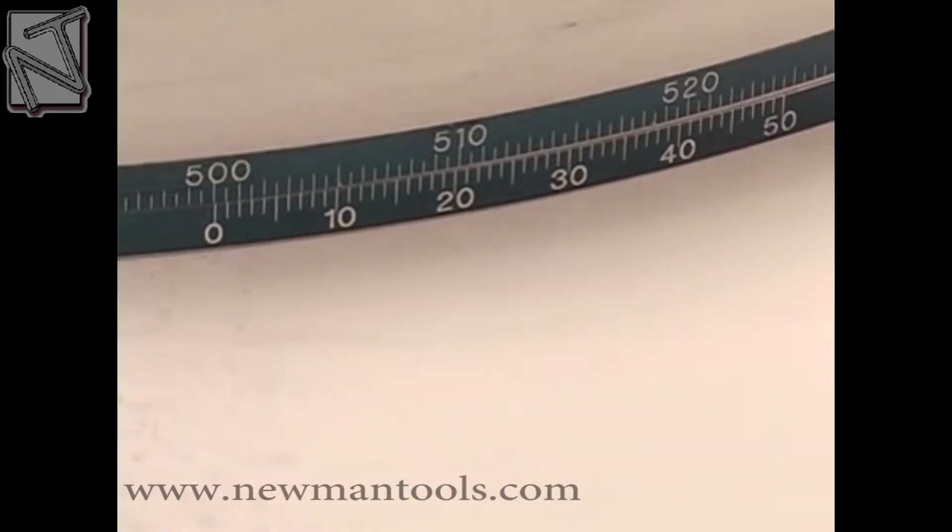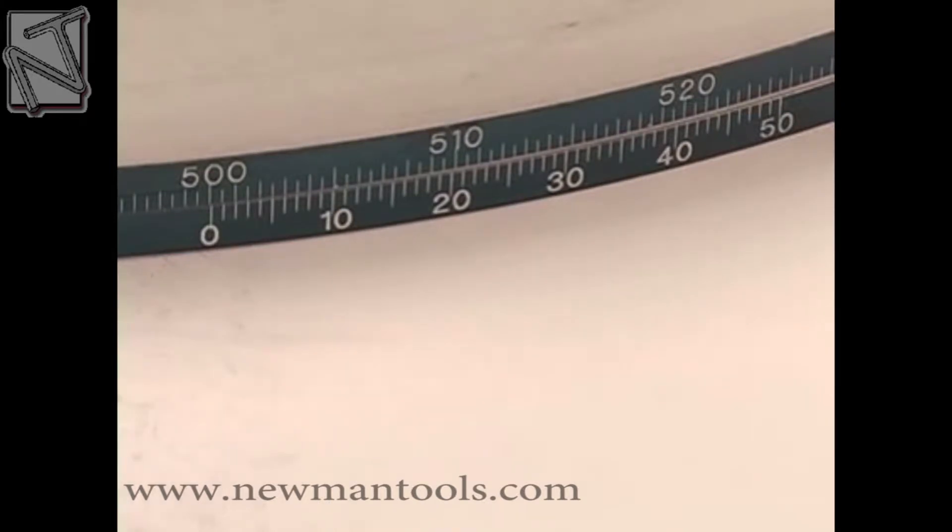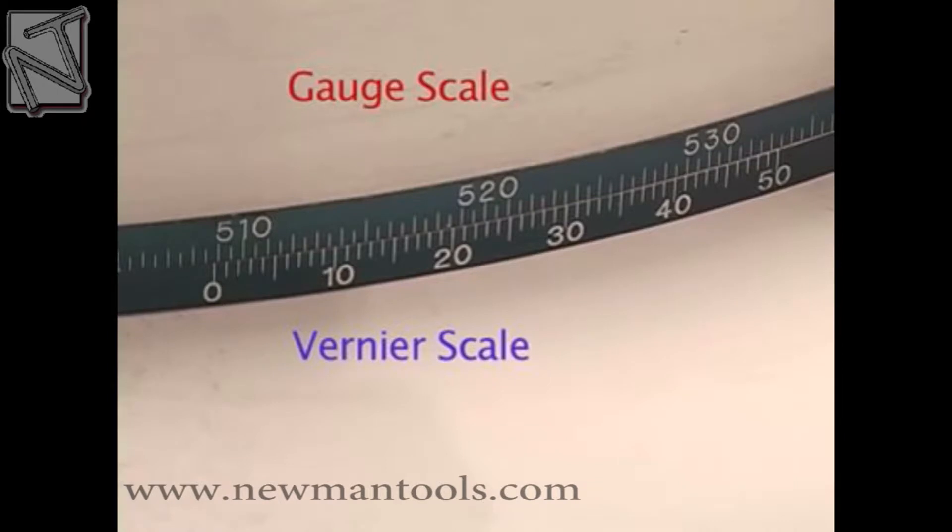Tighten the tape around the object with 2.25 kg tension for outside diameter tapes. The veneer scale should be just below the gauge scale.